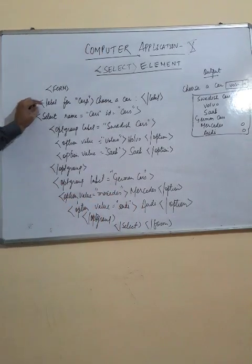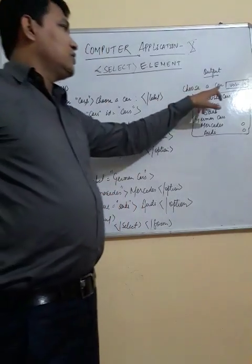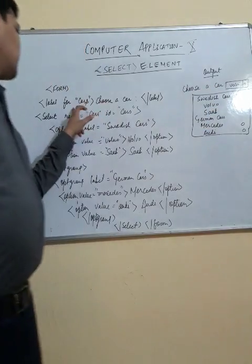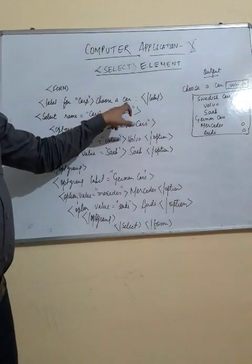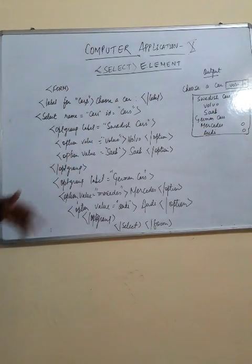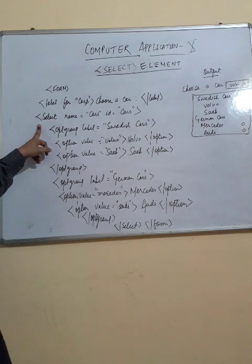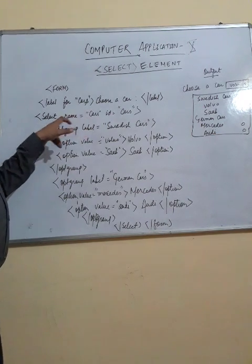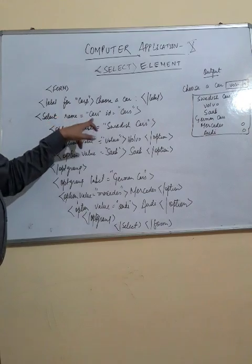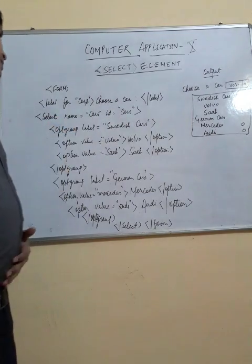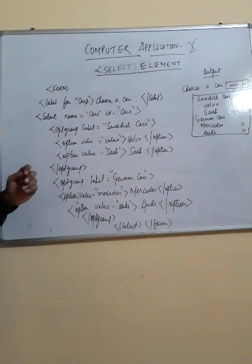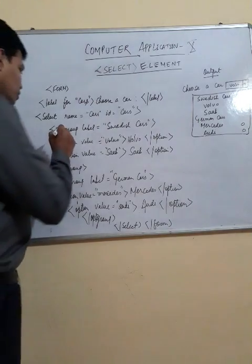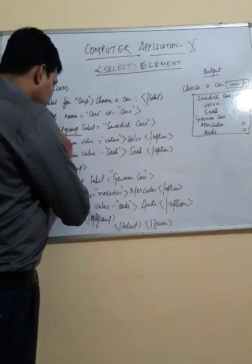First you define a label: 'Choose a Car', which will display on screen. Then you start a select statement to define the list of elements. The select tag has a name attribute 'car' and an ID attribute 'car'.